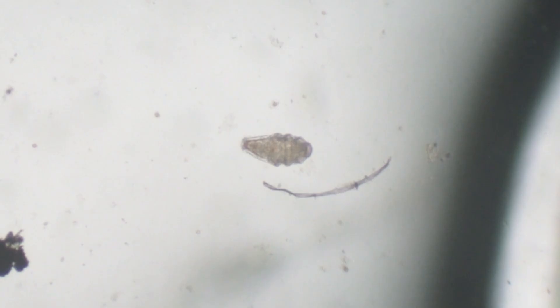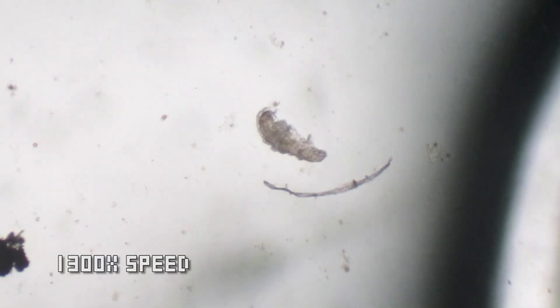Now water bears can enter a state called cryptobiosis when they sense that it's too dry. They dry themselves out like raisins and shrivel up. And it's in that cryptobiotic state that water bears can survive without oxygen, without food, without water. And that's why water bears are really tough.